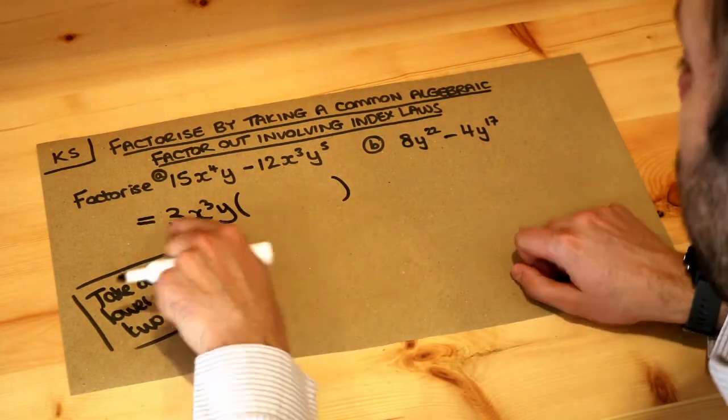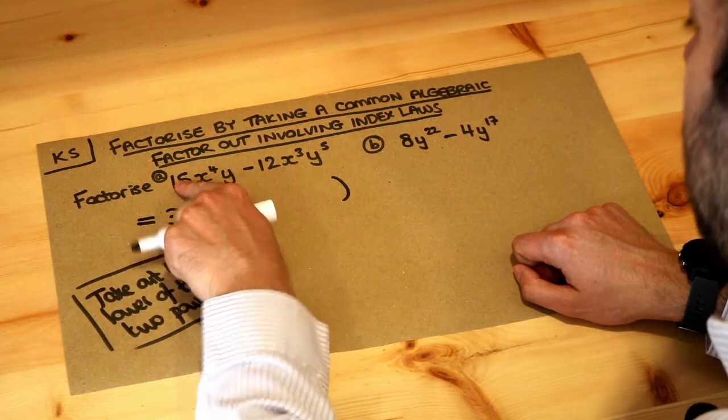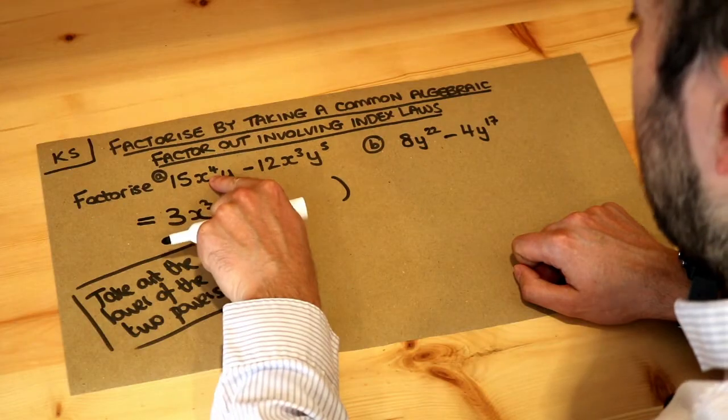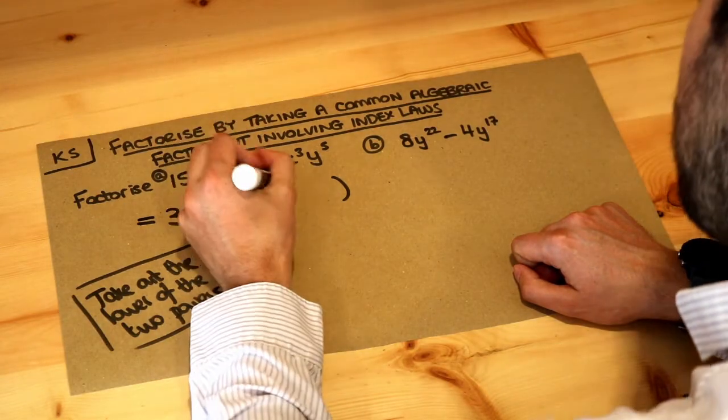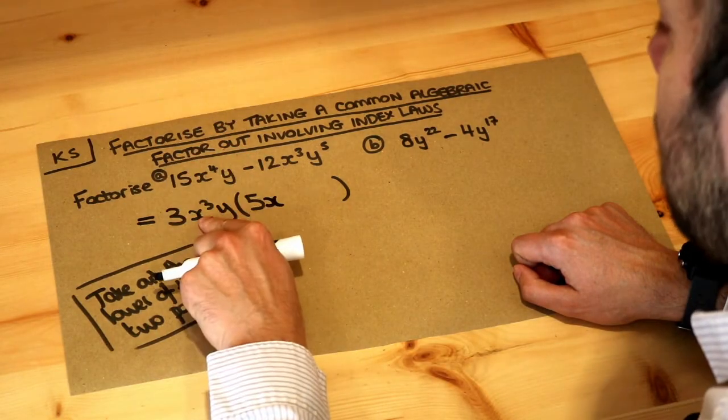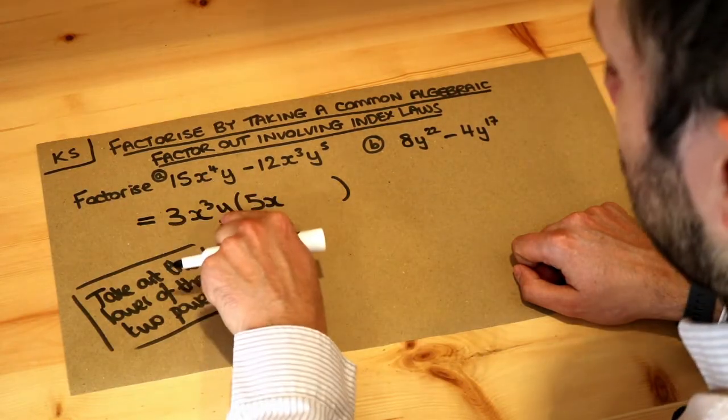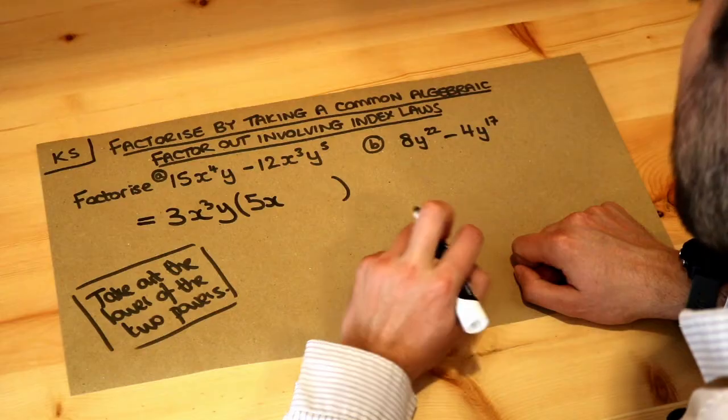So we then think, well, 3 times what is going to give you the 15? It's 5. x cubed times what is going to give you x to the 4? Well, we've got an additional x, so we're going to have to times by an x, so x cubed times additional x is x to the 4. y times what is y? Well, it's already y, so we don't need to do anything there.